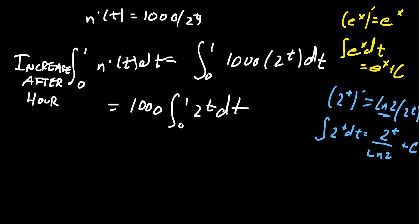And so that's the principle we want to use in this exercise. The anti-derivative of 2 to the t gives us a natural log of 2 in the denominator, then we get 2 to the t. We want to go from zero to one. Plugging in one gives us a 2, so we get 2000 over the natural log of 2.